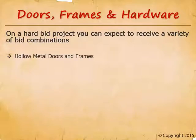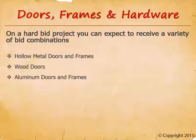You may get bids for hollow metal doors and frames combined, or individual bids for each separately. You might get bids for pre-finished wood doors versus those requiring field finishing by the painter. Separate bids for aluminum doors and frames are common, as are separate bids for door hardware. You might receive a bid for hollow metal that includes hardware but wood doors that don't. You will receive bids with any combination of these items.